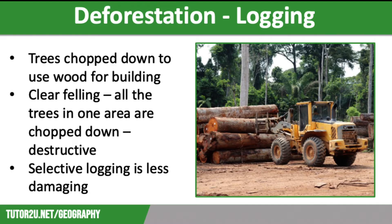The first cause of deforestation is logging. This is when the trees are chopped down to use the wood for things such as building materials or furniture, with tropical hardwoods such as teak and mahogany being particularly valuable. Logging is often the first step in converting forest into land for other uses. One of the most damaging clearance techniques is clear felling, which is where all of the trees in one area are chopped down. This is really damaging as it causes the total destruction of forest habitats.